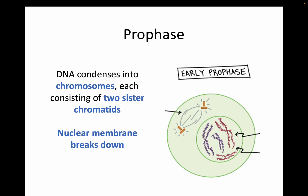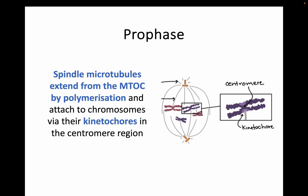When prophase takes place, this is where DNA condenses into chromosomes, consisting of those two sister chromatids — joined by the centromere in the middle — forming that chromosome shape you've seen before. At this point the nuclear membrane is going to break down, so the genetic information is prepared for separation. The microtubule organising centres, MTOCs, are then going to send out spindle microtubules. Polymerisation is when these spindle microtubules are extending from the MTOC region and attaching to chromosomes.